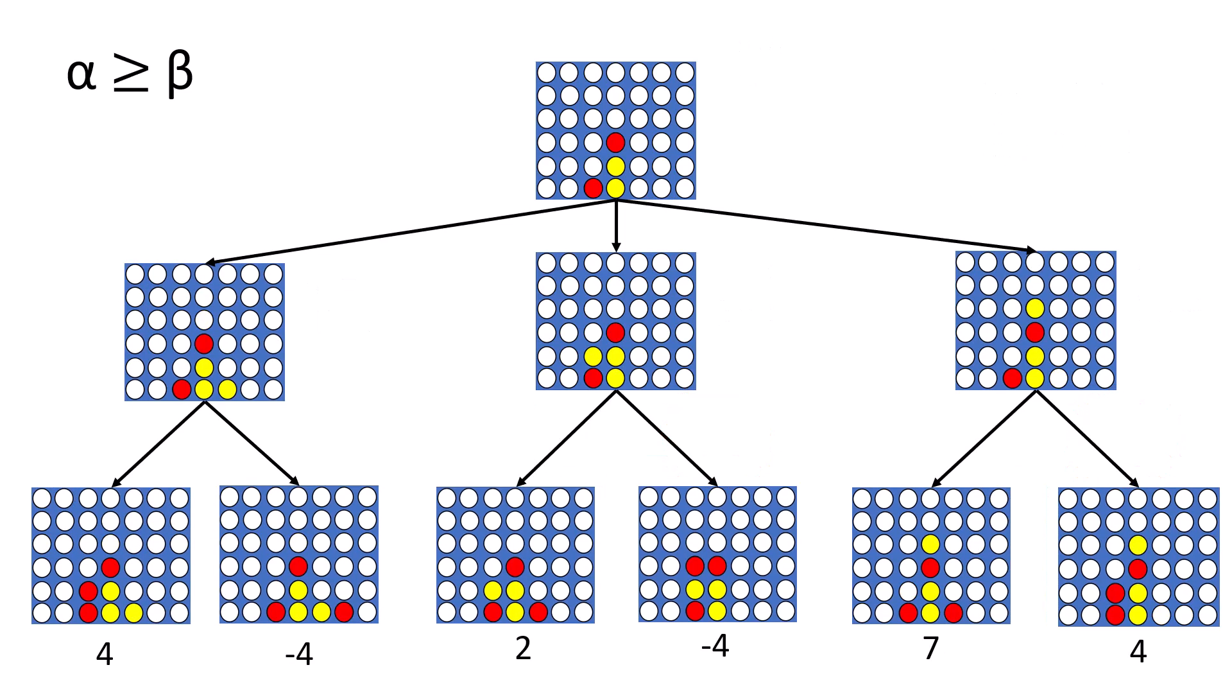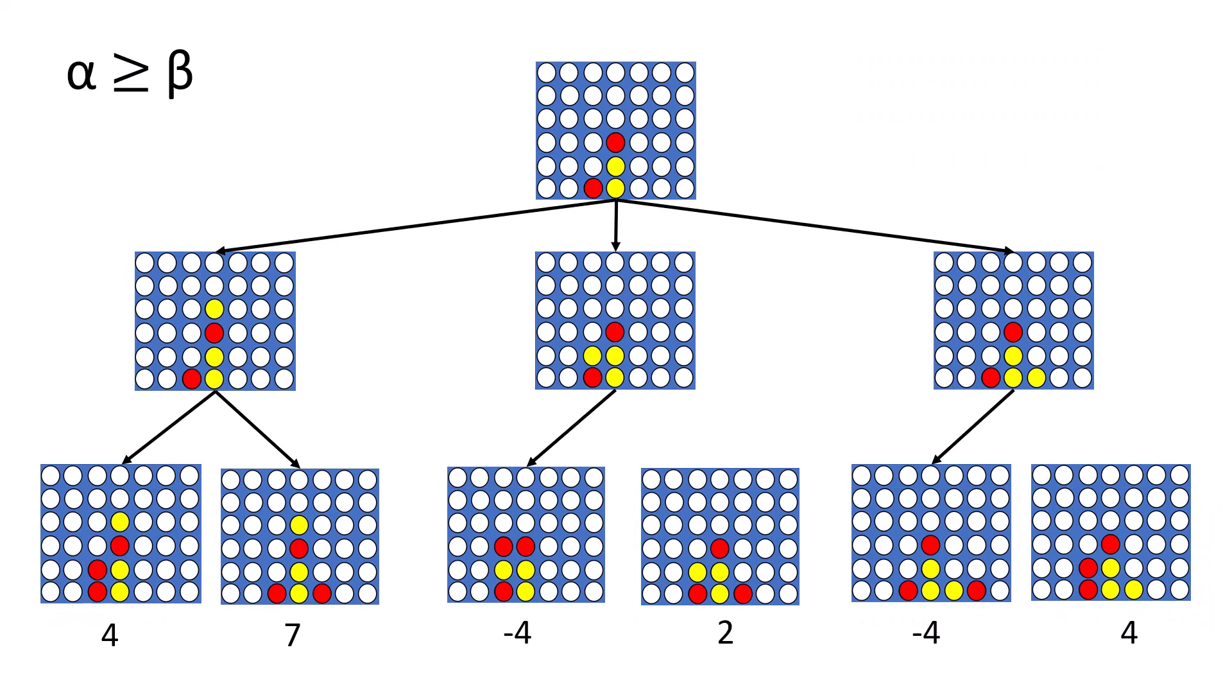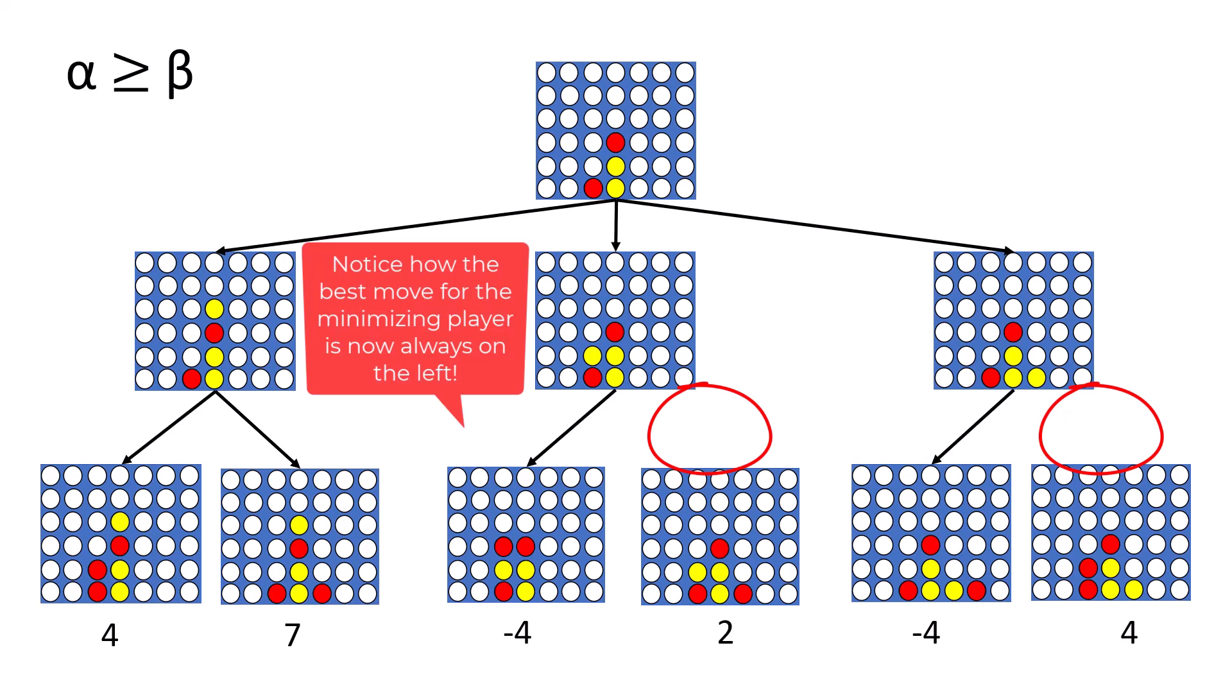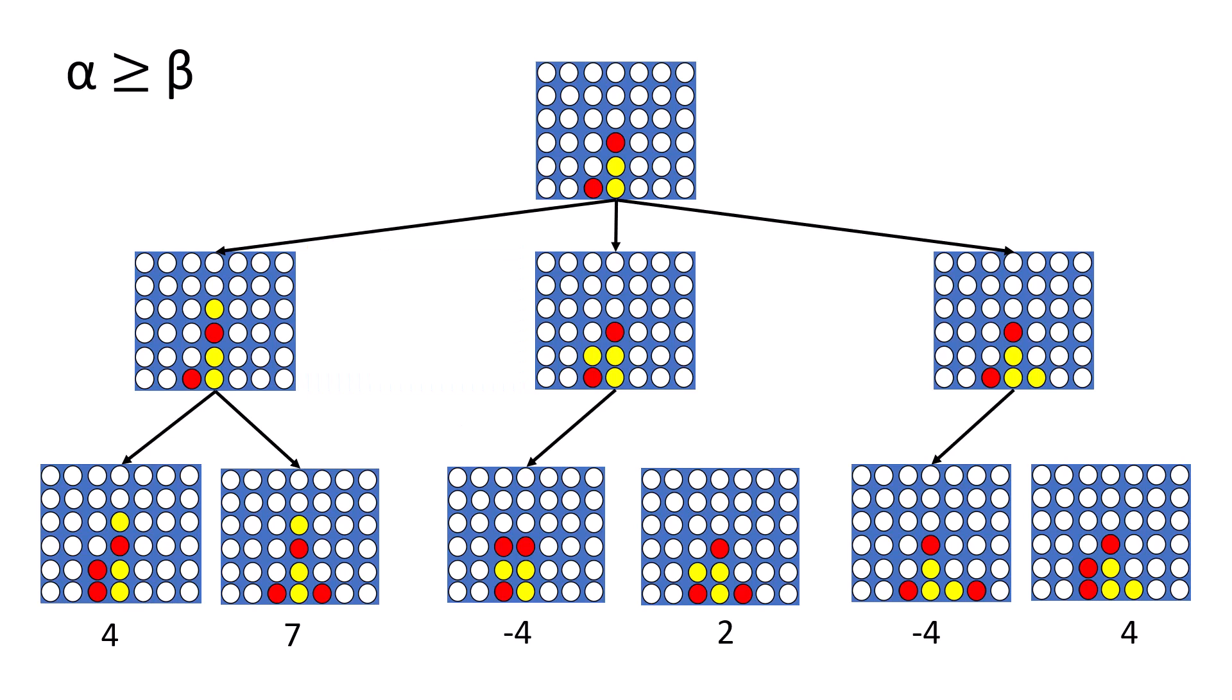It's worth noting that in some cases, alpha beta pruning may not prune any branches at all. This happens when the scores at the bottom of the tree are sorted from the least to best score for the current player. That forces the algorithm to not be able to prune any branches. On the other hand, the algorithm will prune the most branches when the bottom of the tree is sorted from the best to worst score for the current player. In the best case scenario, alpha beta pruning should be able to prune half of the branches, making it two times faster than the minimax algorithm.